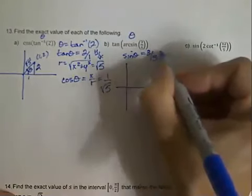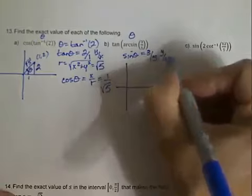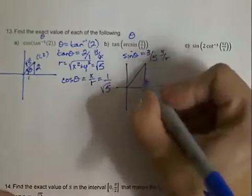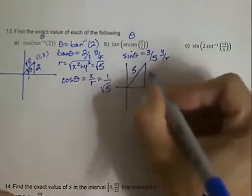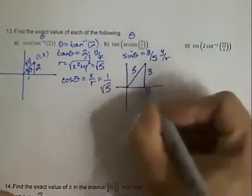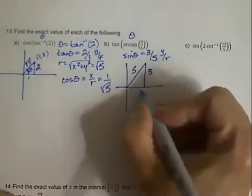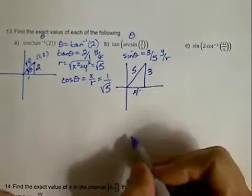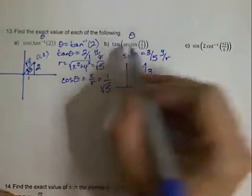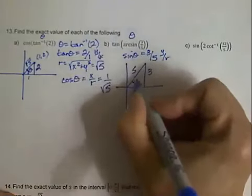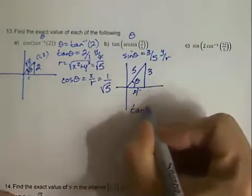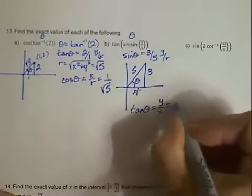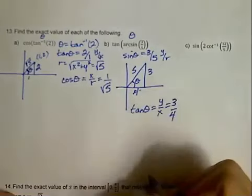We draw this on the graph again. Sine is y over r, so our y is 3 and our r is 5. That makes r equal to 5 and y equal to 3, and we need to figure out x — the other side of the triangle — which turns out to be 4. Now we're looking for the tangent of theta: tangent is y over x, which gives us 3 over 4.